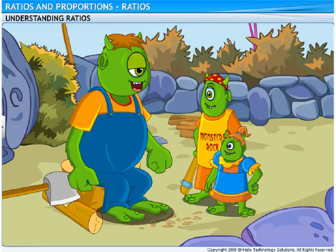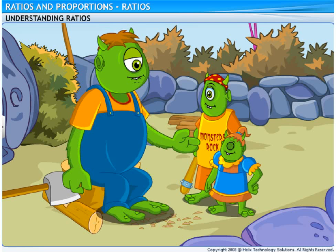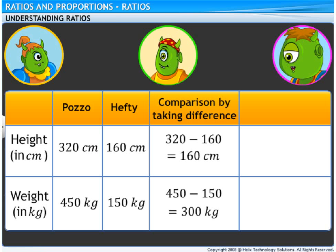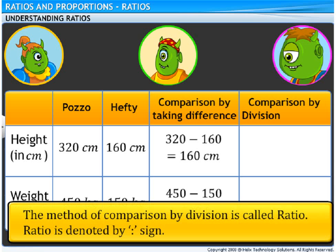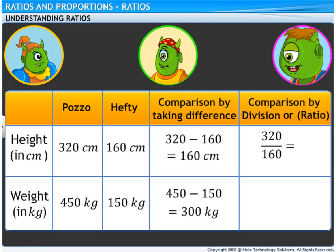However, we still don't know how many times Pozo is heavier and taller than you, Hefty. To calculate how many times the quantities of weights and heights are to each other, we would need to compare the quantities by division. The method of comparison by division is called ratio, and is denoted by this sign. On dividing 320 by 160, we get 2 upon 1. So, the ratio of your heights is 2 is to 1. In other words, Pozo is 2 times taller than Hefty.